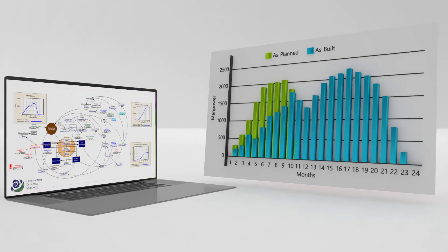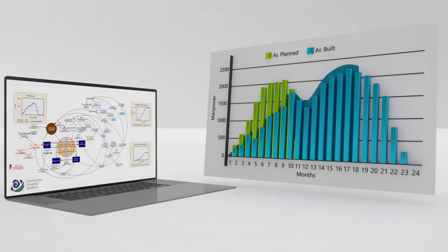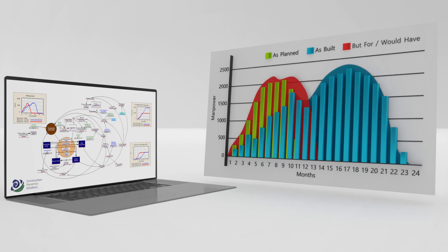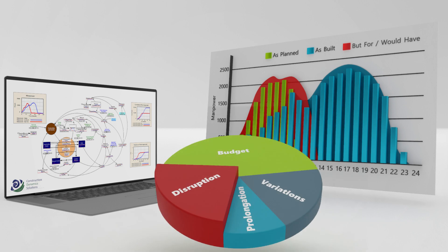How does it work? The model starts by reproducing the actual as-built performance of your project. But it then does much more. By simply removing the disruptive events caused by the employer, the model also shows how things would have turned out but for these events — in other words, what would have happened if these disruptive events had never occurred. So, System Dynamics accurately and defensibly determines how much disruption was caused by the employer, unmistakably linking his actions to the disruption that they and they alone caused on your project.